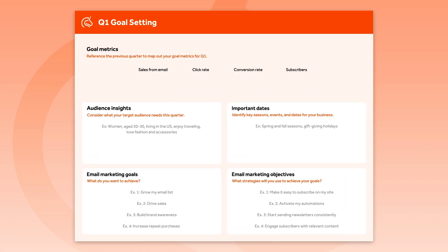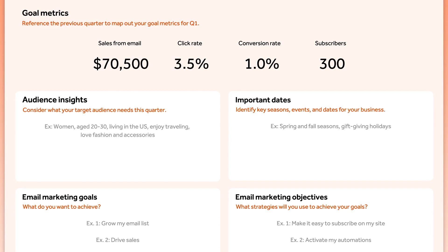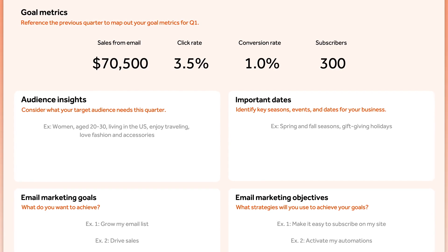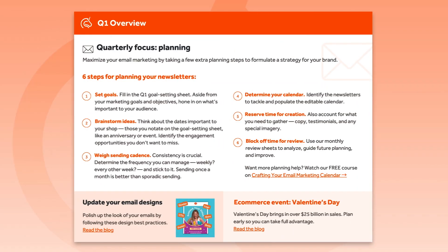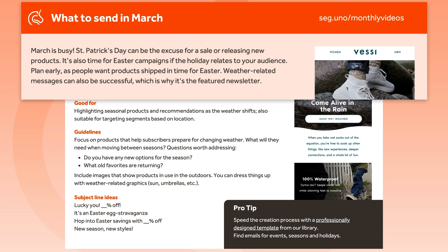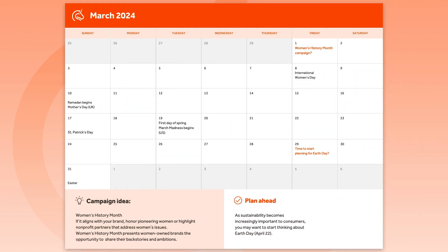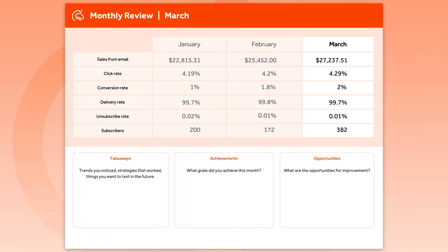Before you build your plan, it's important to set goals for the upcoming quarter. The guide starts and ends with a metric summary — edit these numbers to reflect your metrics and start tracking the impact of your marketing efforts. You'll find a suggested focus for the quarter on the following page. Consider this focus when setting your goals and objectives. The guide follows the same format for each month of the quarter: one, content ideas for what to send; two, a newsletter idea; three, the calendar; and four, a monthly metrics review.